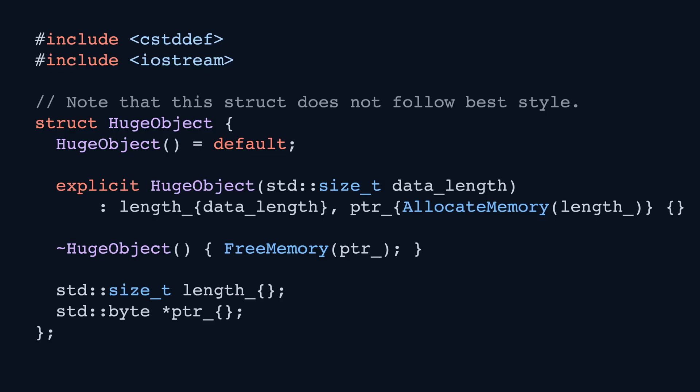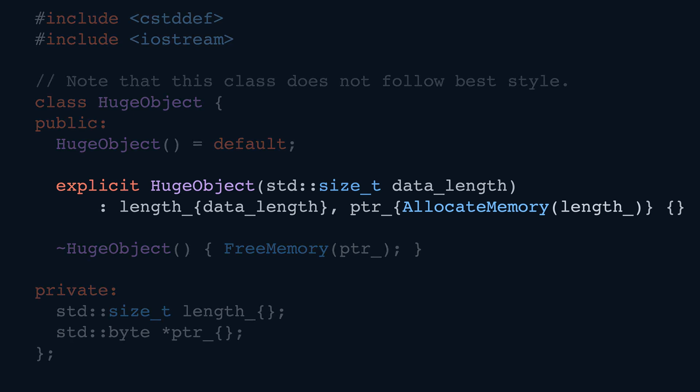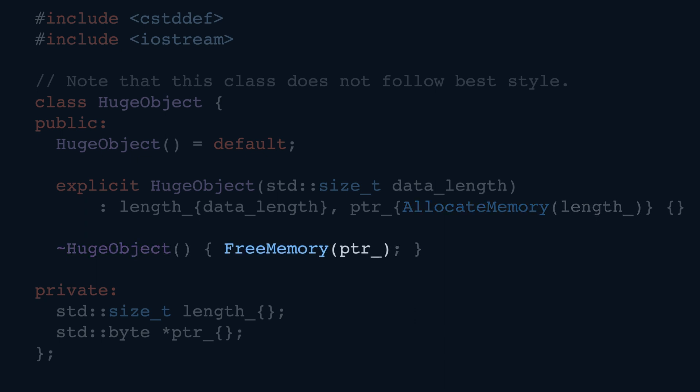Rather, in the spirit of this course, let's build up to these good practices by formulating various rules of good style and summarize them as a single easy-to-remember rule afterwards. In the previous lecture on move semantics, we had a struct HugeObject that owned some big chunk of memory, and today we're going to make it a class to ensure encapsulation. It allocates a chunk of memory in its constructor through some magic function AllocateMemory, and frees this memory in its destructor through some other magic function FreeMemory. Their exact implementation is not important right now.